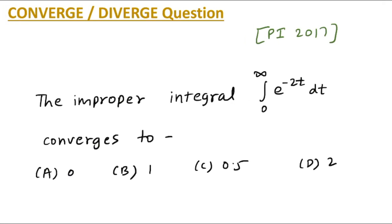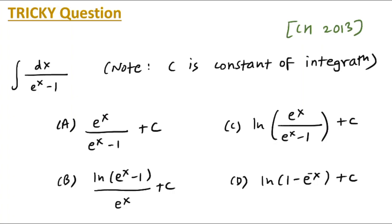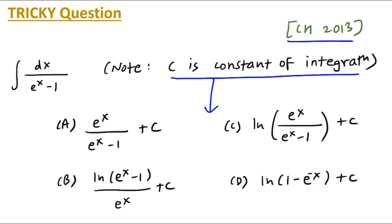The answer is 0.5, which means option c is correct. The next question is asked in the Chemical Engineering 2013 gate paper: integral of dx upon (e raised to x minus 1), where c is the constant of integration. Option a is e raised to x upon (e raised to x minus 1) plus c — among the four options you have to think how you will solve this integration, because we do not have any standard result for this type of function.